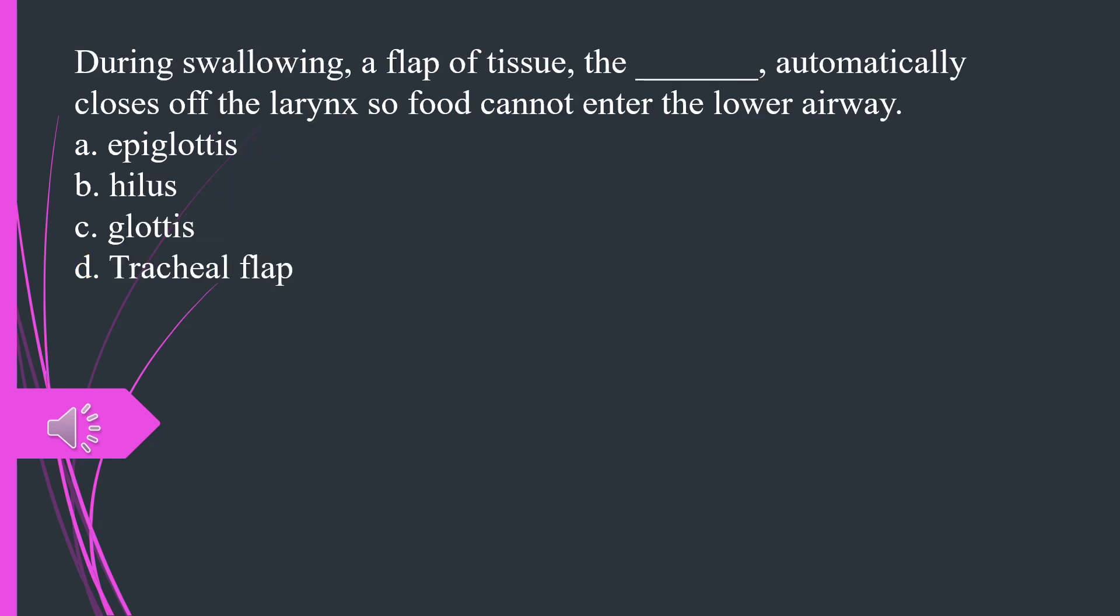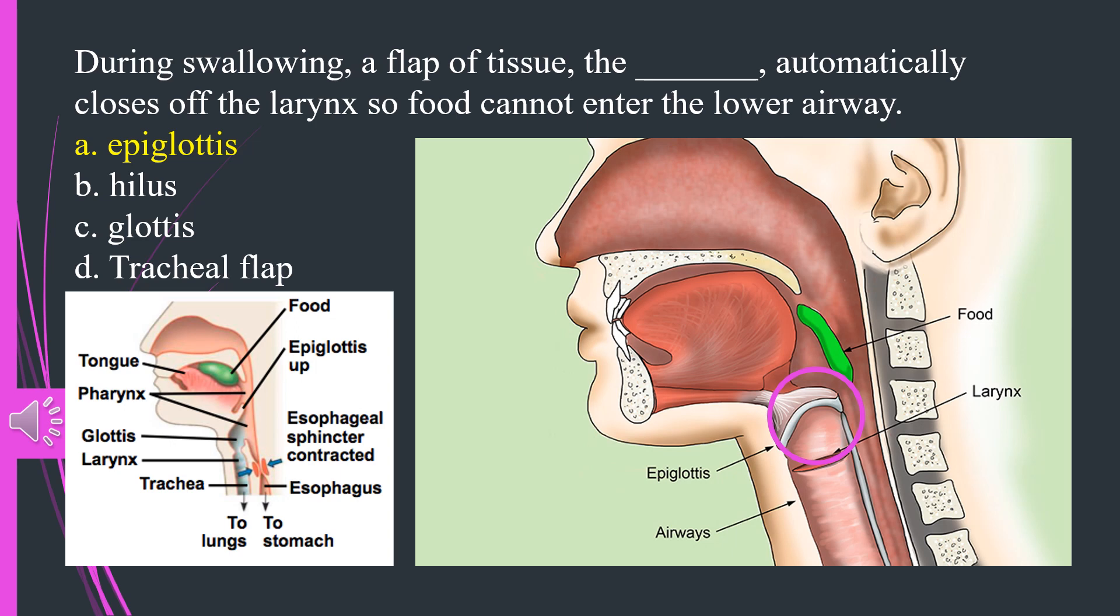During swallowing, a flap of tissue, the what, automatically closes off the larynx so food cannot enter the lower airway. A. Epiglottis B. Hylus C. Flottis D. Tracheal flap. The answer is A, epiglottis.